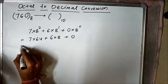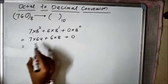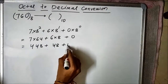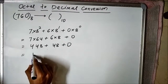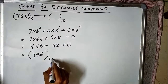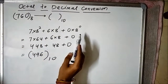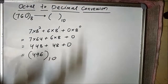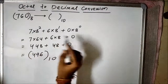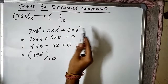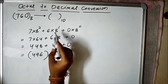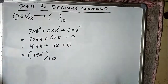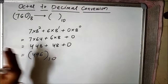The 0 term does not matter. So this is equal to 7 into 64, plus 6 into 8, plus 0 — which gives 448 plus 48 plus 0, equal to 496 in decimal form. We simply multiplied the weight values with the given digits according to their positions: 8 to the power 0 for 0, 8 to the power 1 for 6, and 8 to the power 2 for 7, then added the values to get the result.